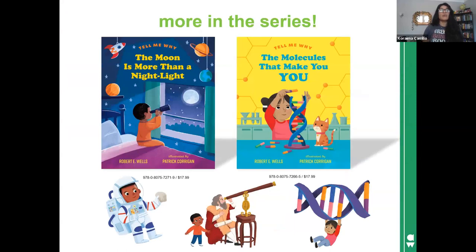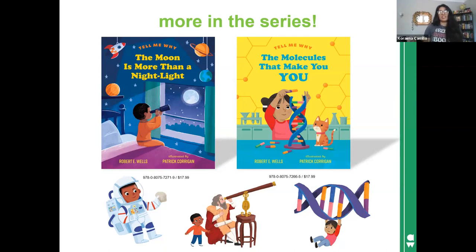Others in this series include Tell Me Why the Moon is More Than a Nightlight, where we discover how the moon was formed and why it changes shape in the sky — a story that began 4.5 billion years ago and continues to affect everything from weather to timekeeping. Kirkus Reviews called it a solid introduction to some complicated science. In The Molecules That Make You You, Wells explores DNA with curiosity and awe, noting that human DNA might be 99% the same, but that last 1% difference makes each person unique. School Library Journal says it's a straightforward, easy-to-understand, and brightly illustrated book for any nonfiction collection.